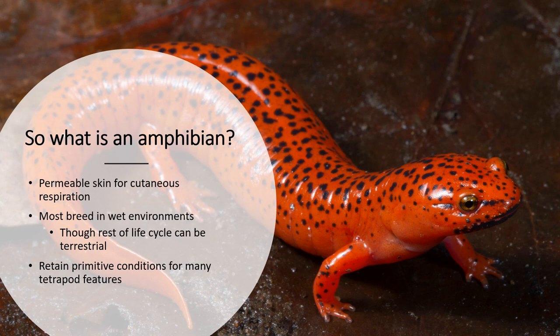So what is an amphibian? An amphibian is a permeable-skin animal with cutaneous respiration. They have to breed in wet environments and feel moist to the touch because that skin needs to stay moist. They can be terrestrial, but even then they stay in humid environments — you'll find them in moist leaf litter. They retain many primitive features that we see in early tetrapods, giving us insight into how our own group managed to get onto the surface of the earth and persist.